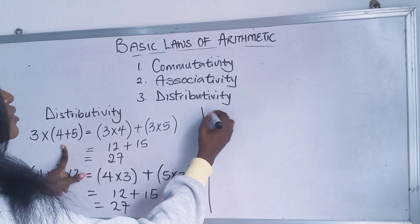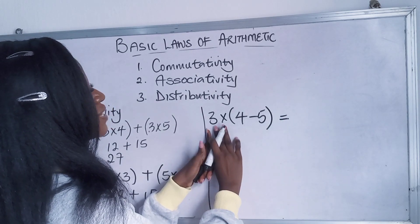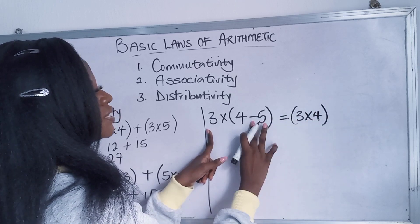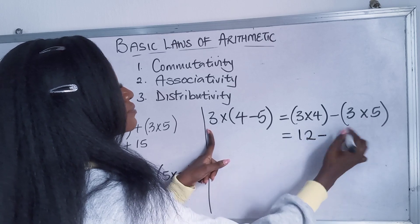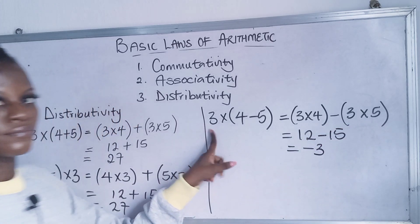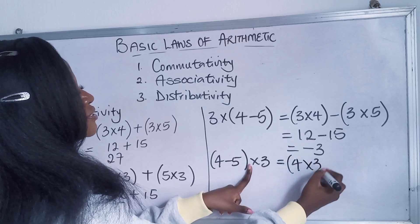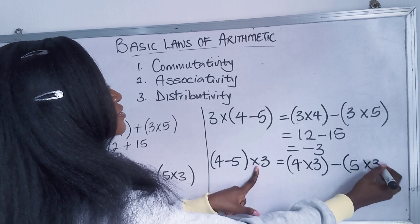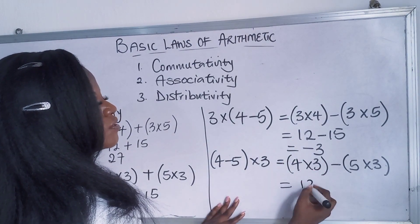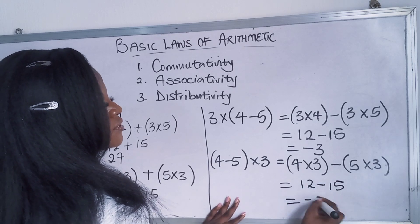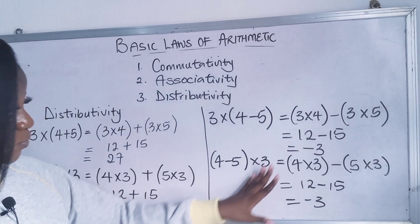Let's try multiplication over subtraction. 3 times (4 minus 5) distributes as 3 times 4 minus 3 times 5, which is 12 minus 15, giving minus 3. Now the reverse: (4 minus 5) times 3 distributes as 4 times 3 minus 5 times 3, which is also 12 minus 15, giving minus 3. This tells us that multiplication can be distributed over both addition and subtraction, and we get the same answer in both cases.